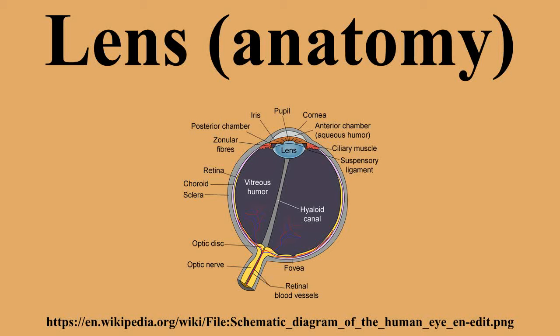The lens is flexible and its curvature is controlled by ciliary muscles through the zonules. By changing the curvature of the lens, one can focus the eye on objects at different distances. This process is called accommodation. At short focal distance the ciliary muscle contracts, zonule fibers loosen, and the lens thickens, resulting in a rounder shape and thus high refractive power. Changing focus to an object at a greater distance requires the relaxation of the lens and thus increasing the focal distance.